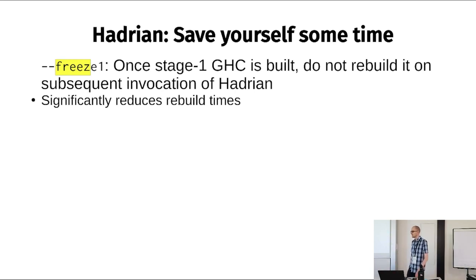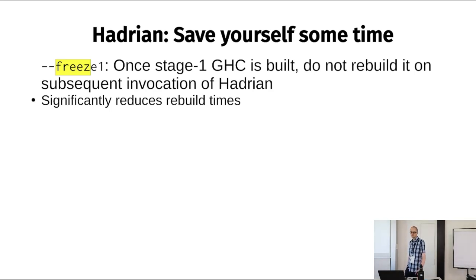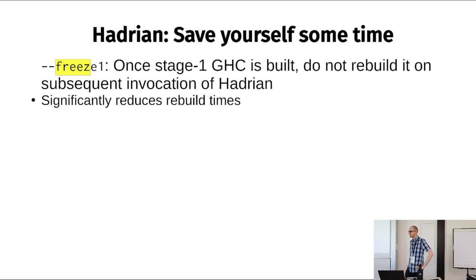Freeze one can also be really useful when debugging. If you've made a change that breaks GHC compilation, debugging a 3,000-line GHC source file is horrible. Instead, build master first, apply your changes, then use --freeze1 to run the test suite. You'll likely get a small 10-line failing test you can debug, which is much better than a huge source file.